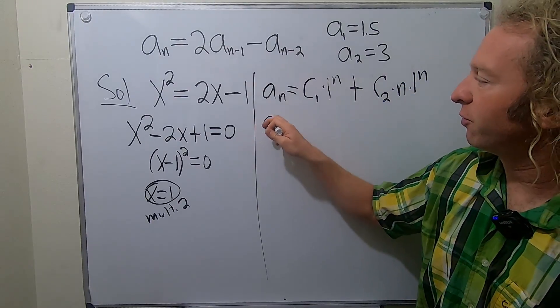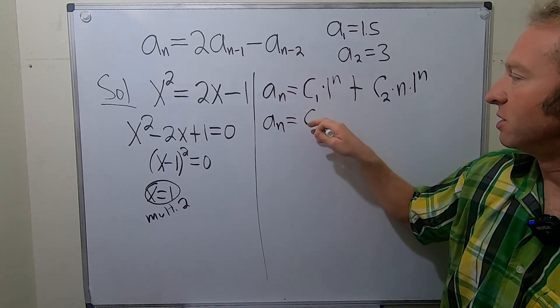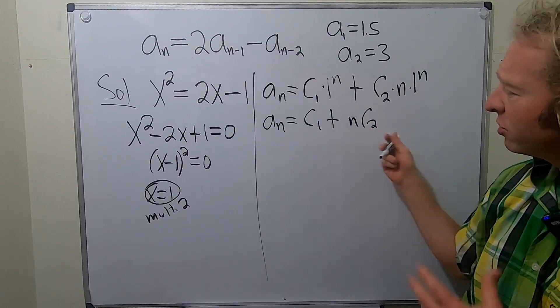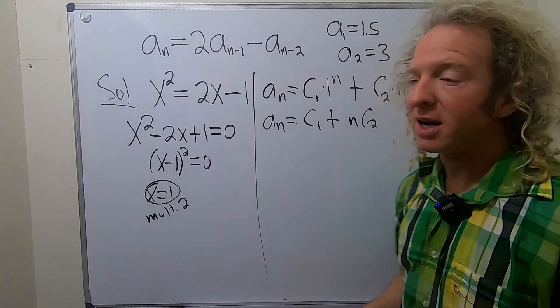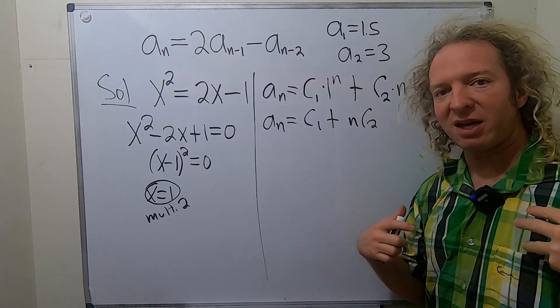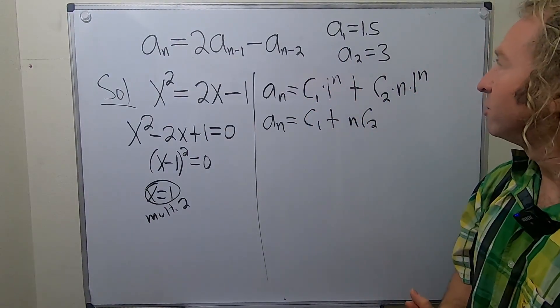1 to the n is 1. So for convenience, I'm just going to write this as c1 plus... I'm going to put the n in front of the c2. Okay, so this is the answer to this. Now we have to impose our initial conditions to actually find the c's, and then we're done.